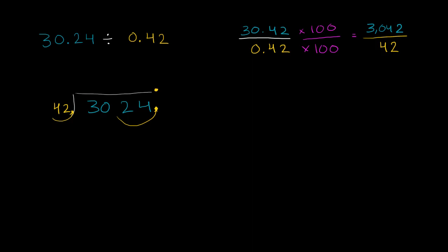And we already know how to tackle that, but let's do it step by step. How many times does 42 go into 3? Well, it doesn't go at all, so we can move on to 30. How many times does 42 go into 30? Well, it doesn't go into 30, so we can move on to 302. How many times does 42 go into 302? And like always, this is a bit of an art when you're dividing by a multi-digit number.